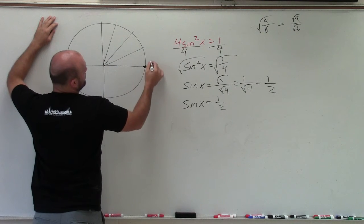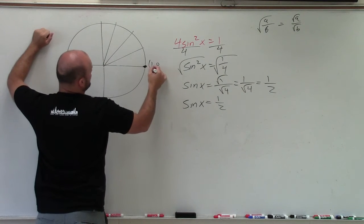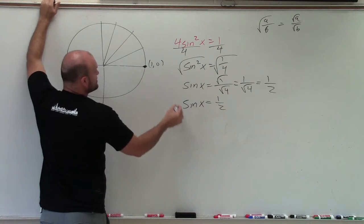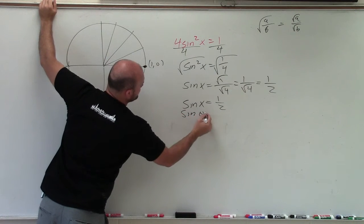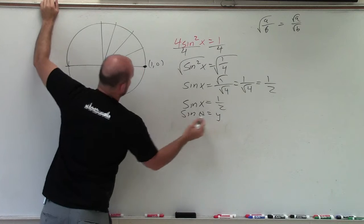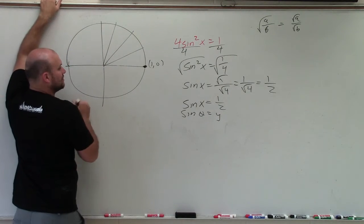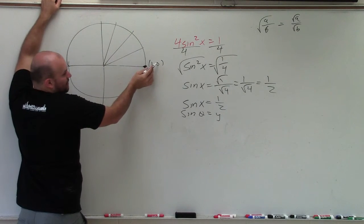And we just go ahead and look at the first quadrant. Our first point at 0 is the point 1 comma 0. Well, obviously, the sine of any angle is equal to the y-coordinate of your point on the unit circle. So obviously, my y-coordinate is not 1 half there.